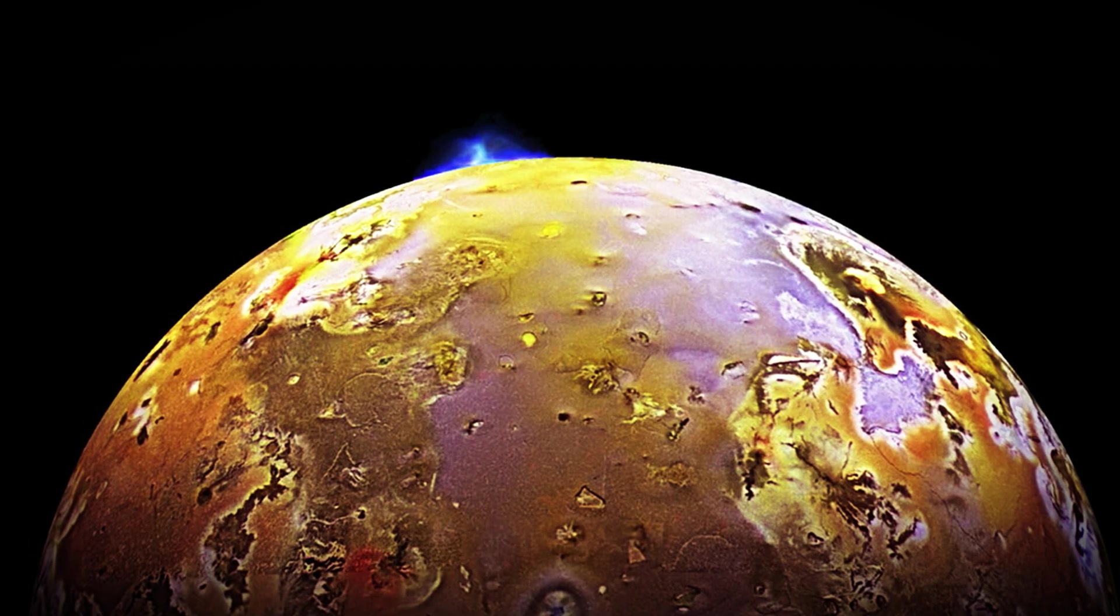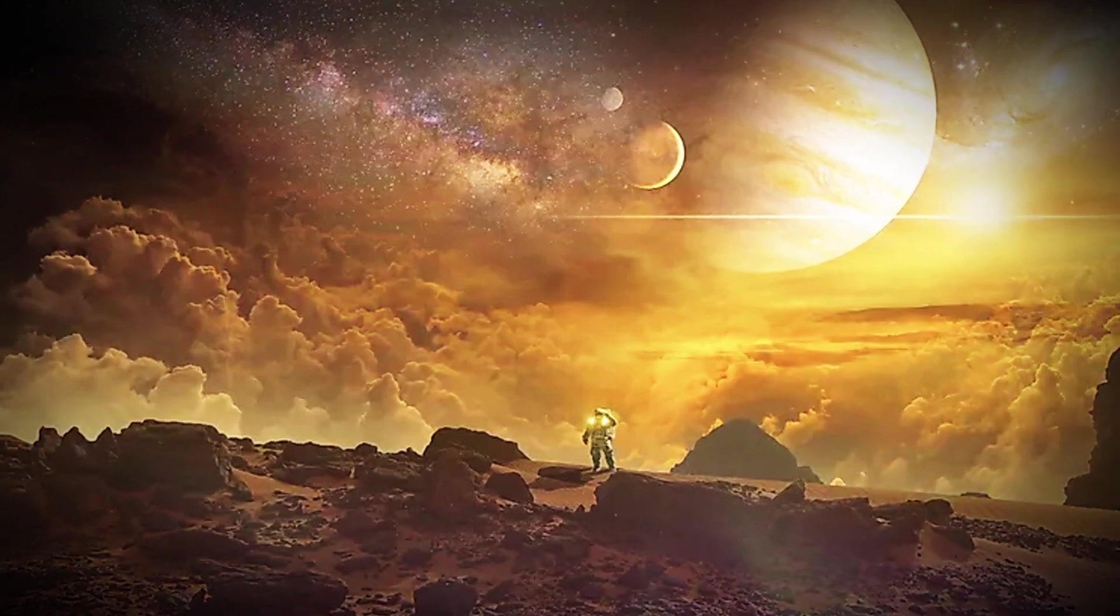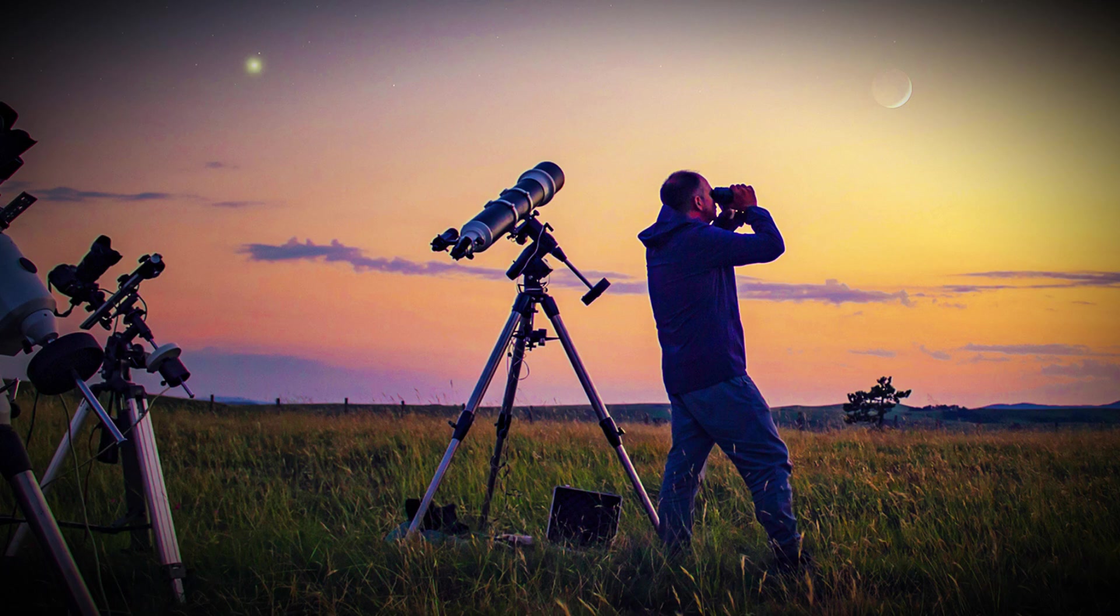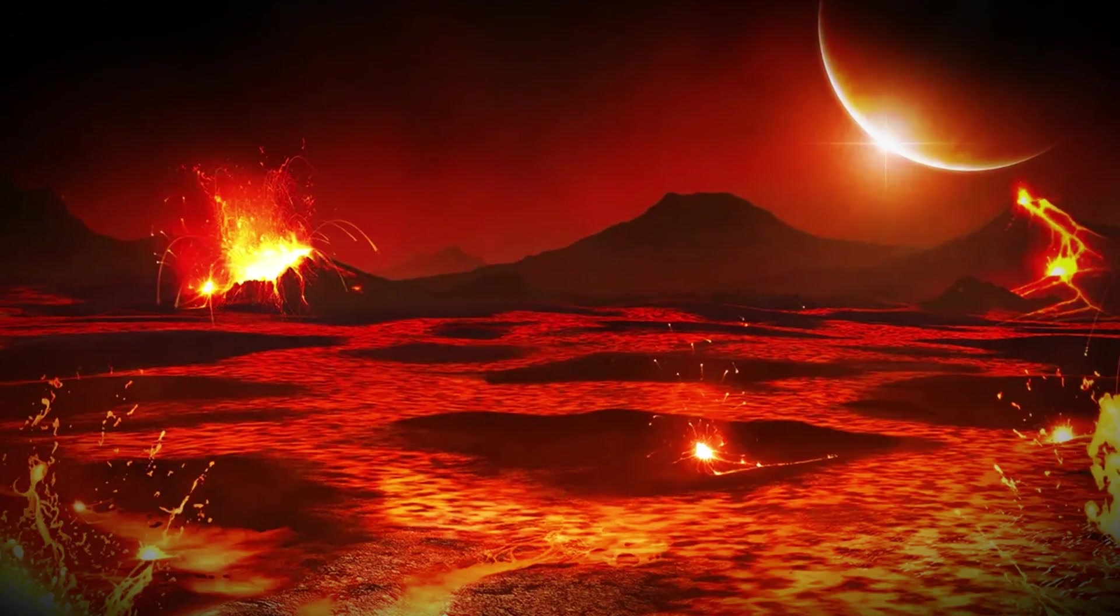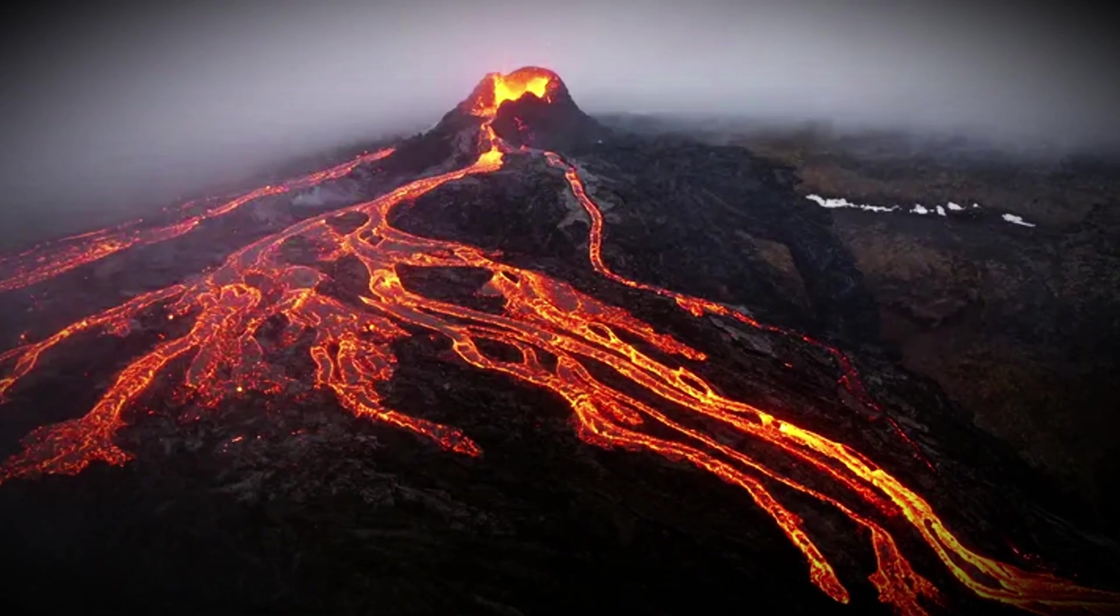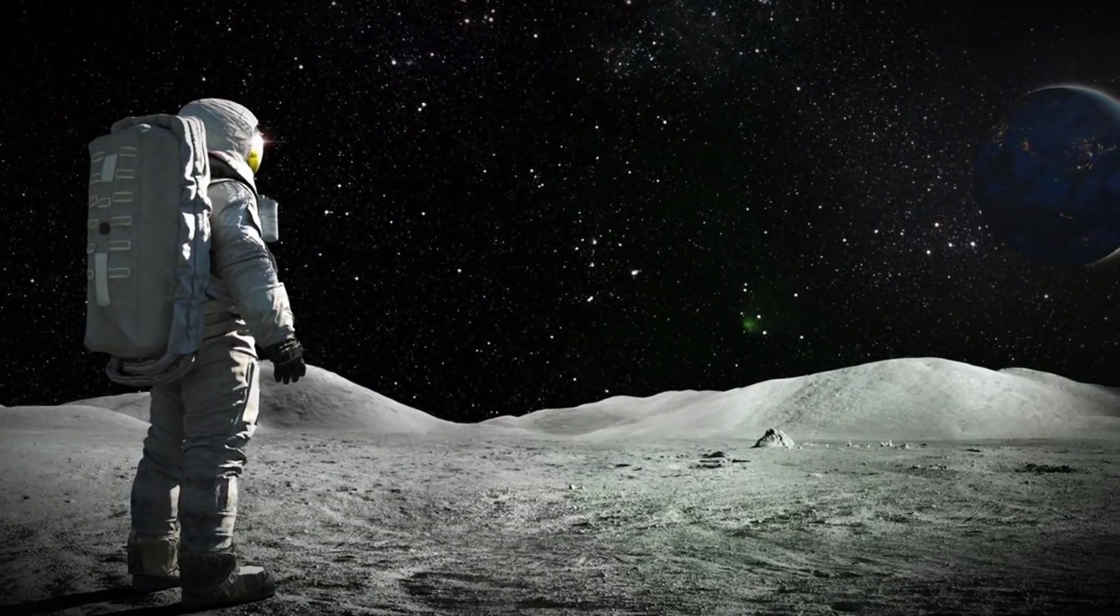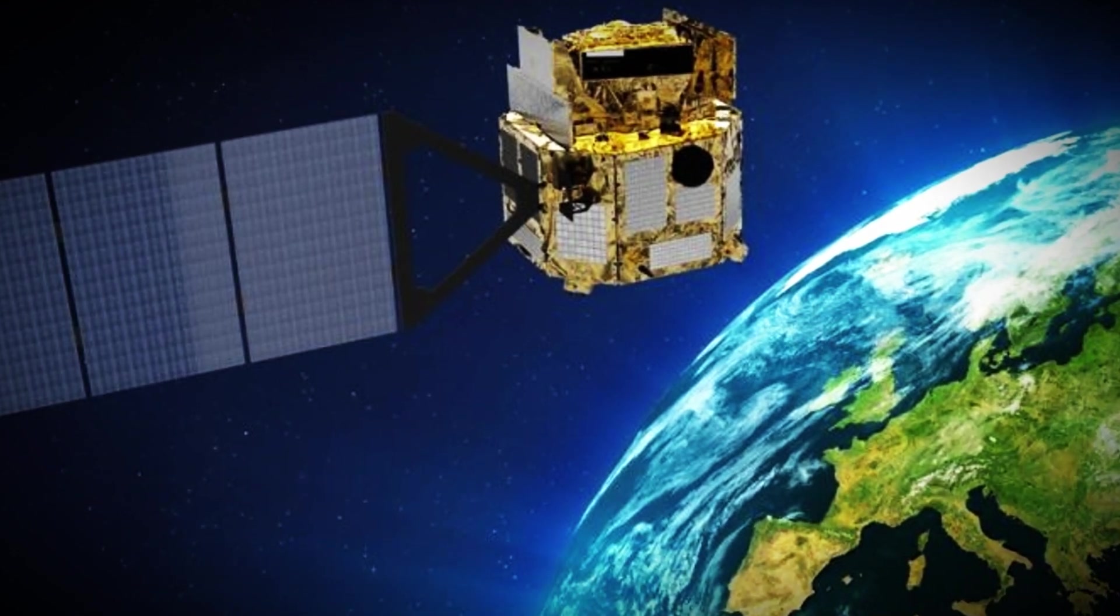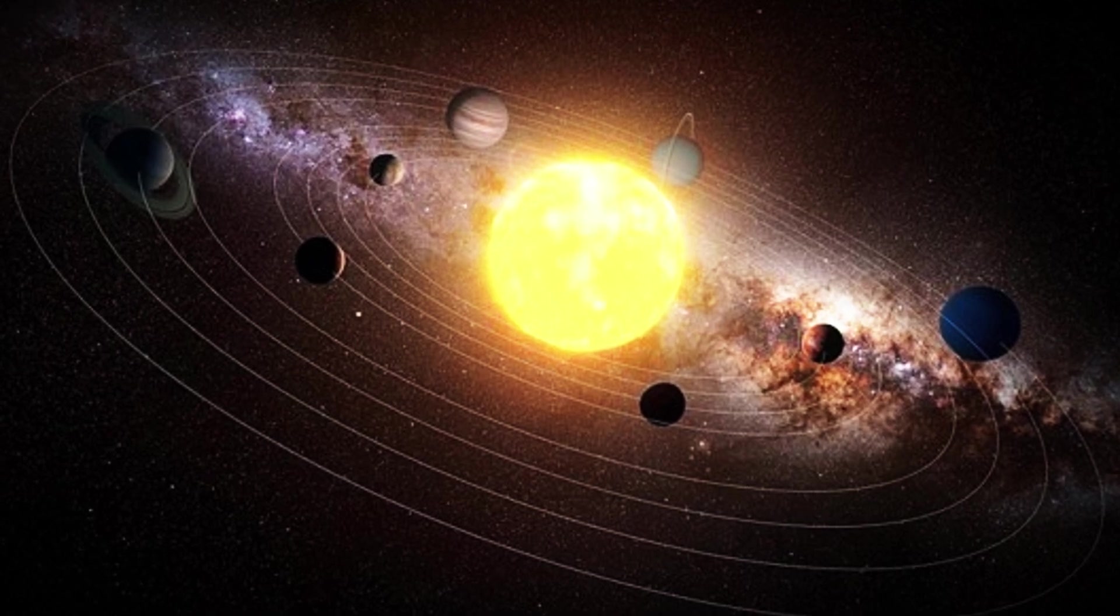Jupiter's moon Io had already been known for centuries. As one of the largest moons in the solar system, Io had been visible through relatively simple telescopes since the late Middle Ages. The 1970s brought a groundbreaking discovery: volcanic activity on the moon. No one had anticipated witnessing sulfurous volcanic eruptions shooting kilometers into space from the lunar surface. This was the first direct observation of geological processes on another celestial body, marking a significant milestone in planetary research.